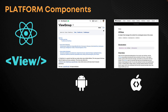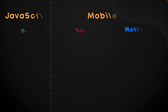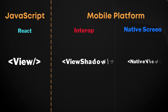Now, this means that there is some level of interop that needs to happen between the native component and our JavaScript code. The great thing about React Native is that all of this interop code is also going to be running on the native platform that we are targeting.